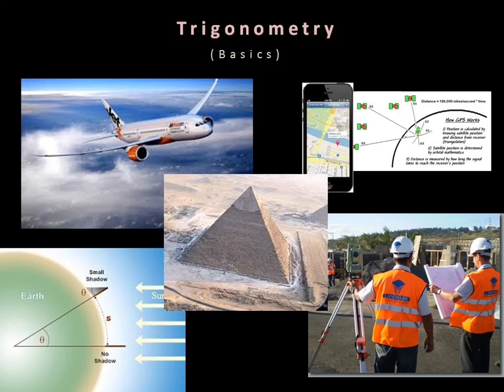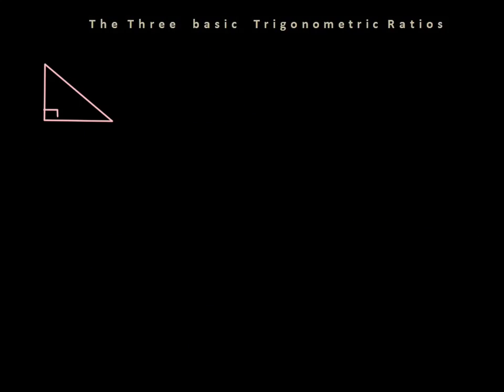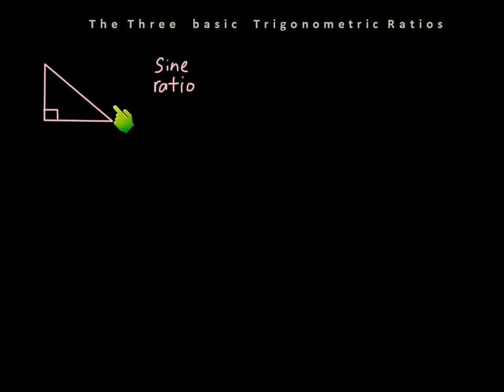Let's take a look at the basic trig ratios. There are three basic trigonometric ratios. All of these ratios have to do with right triangles. There is trigonometry for non-right triangles, but we're not going to get into that in this class.